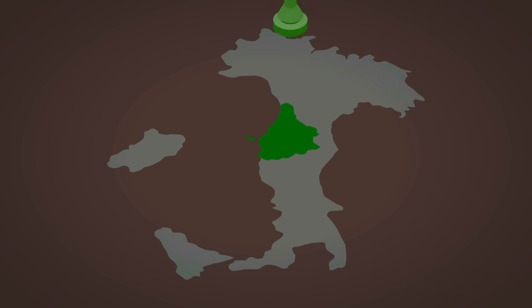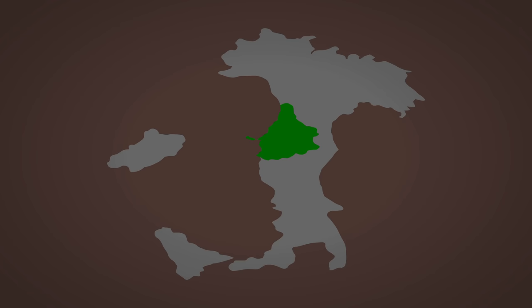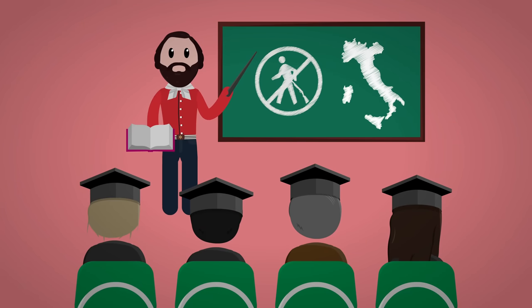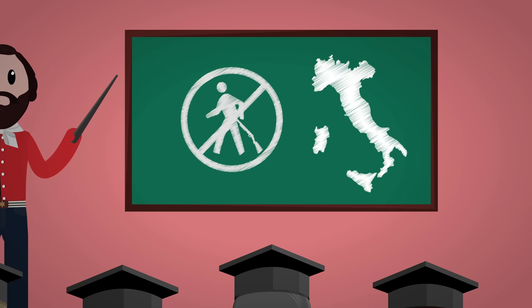In Tuscany, the king was first forced to accept a new constitution and eventually driven from his country — only later, with the Austrian army's help, did they reclaim the land. The first attempt at Italian unification failed, but the revolutionaries learned valuable lessons: it was possible to kick out the rulers, but not possible to keep them out without allies; and if Italy became republican, the monarchies of Europe would crush them as they did with Rome.